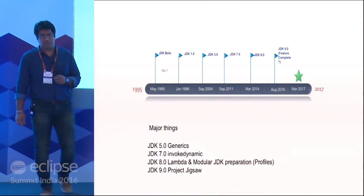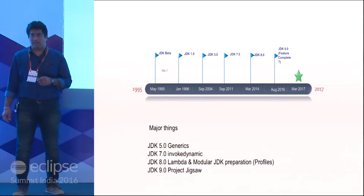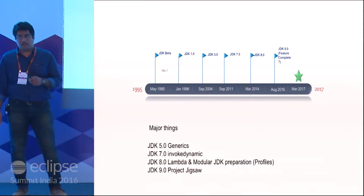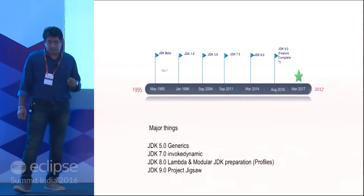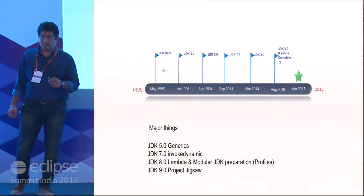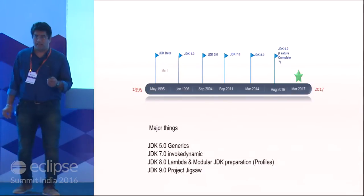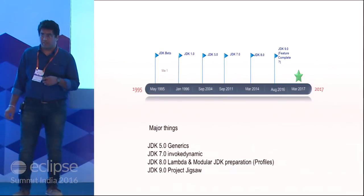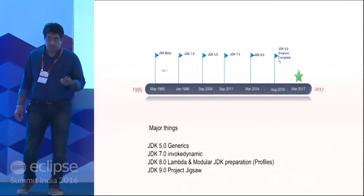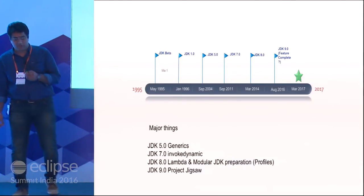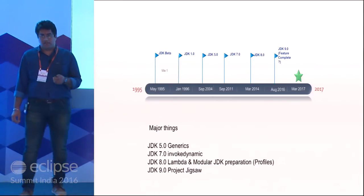Just a brief timeline view about the Java history. Java Beta was released in 1995 and over the years it has grown to cater to different needs of the enterprises. Then we had the first release in 1996, after that in September 2004 we had JDK 5, then JDK 8, and now we are on the path of getting JDK 9. Basic good things which came into the timelines were generics, invoke dynamic, Java 8 had Lambda, and now Java 9 has Project Jigsaw, REPL, and various other features.